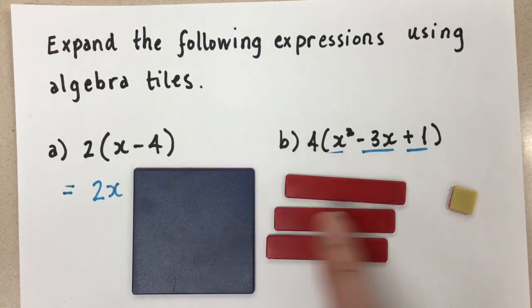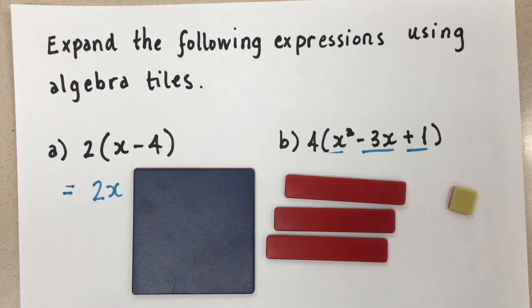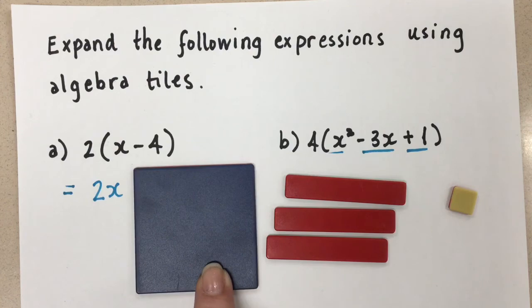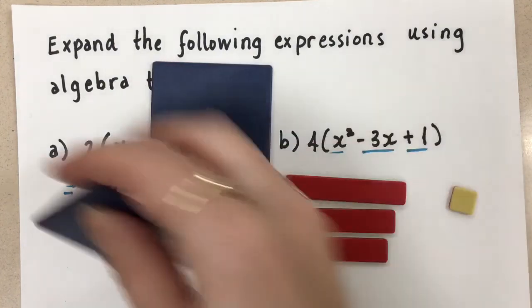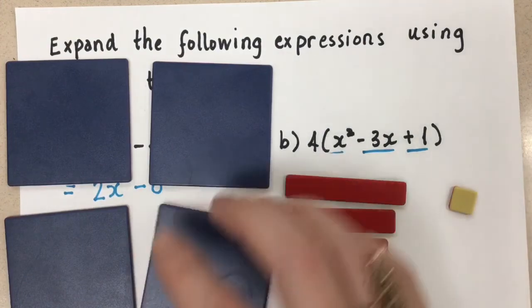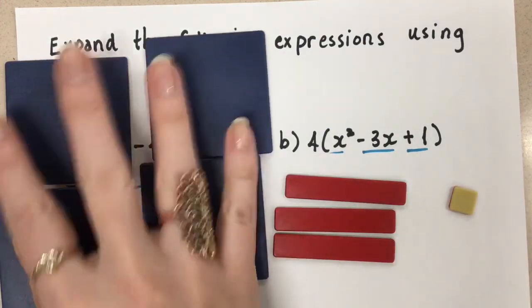We're going to multiply everything by 4. So we need 4 times the amount that we have here. 4 times the x squared means we have 4 of them now. Let's see if we can fit these all in. Okay, 4x squared.